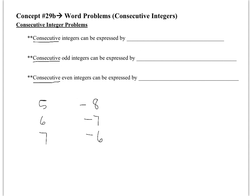So if you think about it, if I don't know what the first one is, I can call the first one x. Then the second one — what do I have to do to x to get to the next one? You're just adding 1. So then the next integer would be represented as x plus 1. And then the next one would be x plus 2.